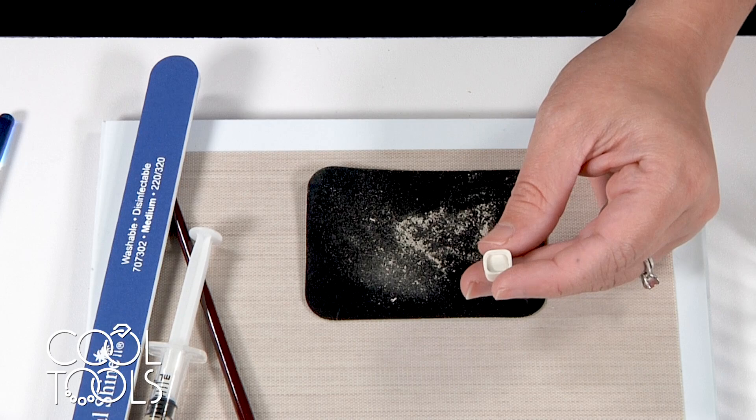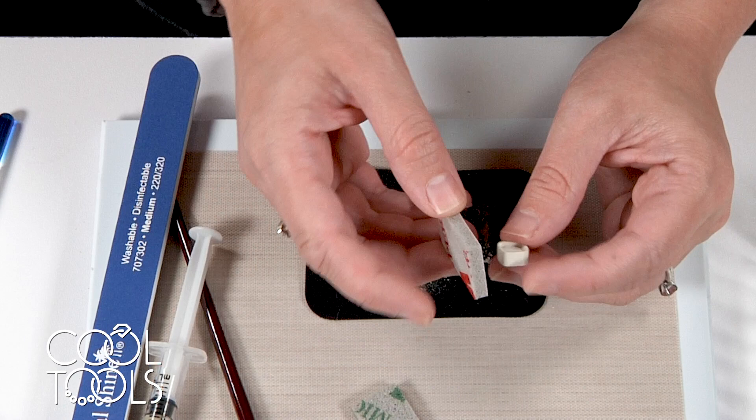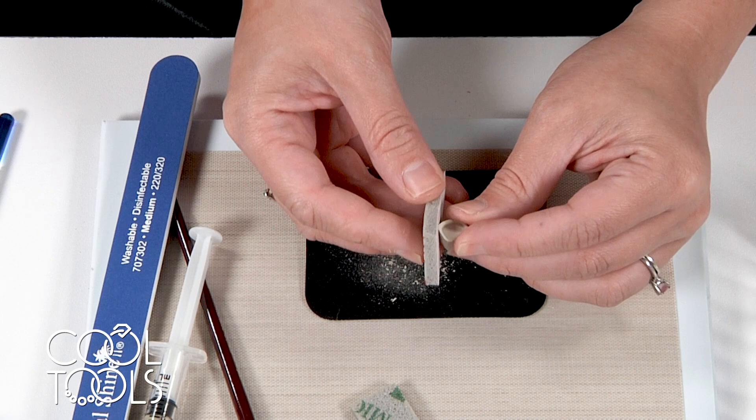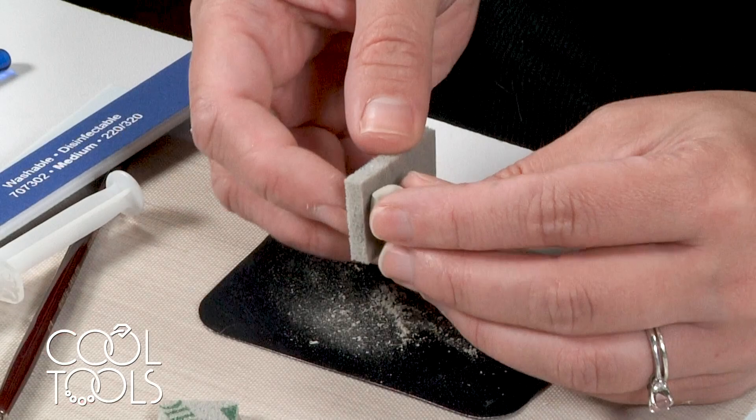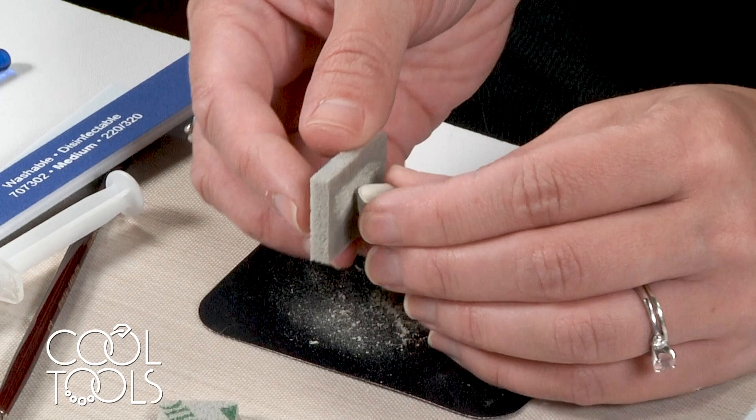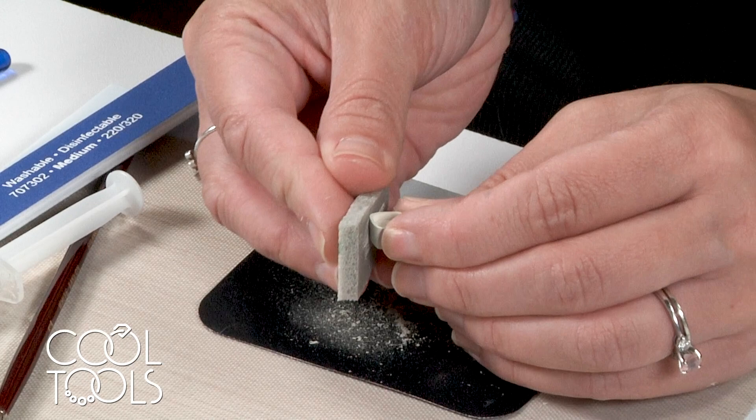As you're sanding, make sure you're not angling your stick and kind of undercutting. You want to make sure that you're keeping your stick nice and perpendicular here. Now that I've established the general shape, I'm going to come in with my sanding pads to kind of refine and remove any scratches that I might have made while I was shaping. I'm starting off with superfine.